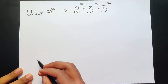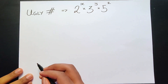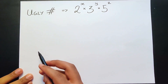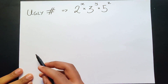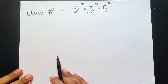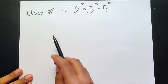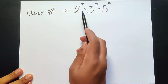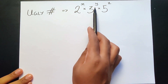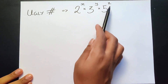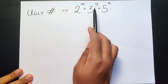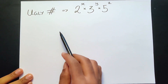Let's first try to understand what an ugly number actually is. As per the definition in our question, it is a positive number whose prime factors only include 2, 3, and 5. In other words, it's any number which consists of 2 to the power of x, multiplied by 3 to the power of y, multiplied by 5 to the power of z, where x, y, and z can be anything equal to or greater than zero.